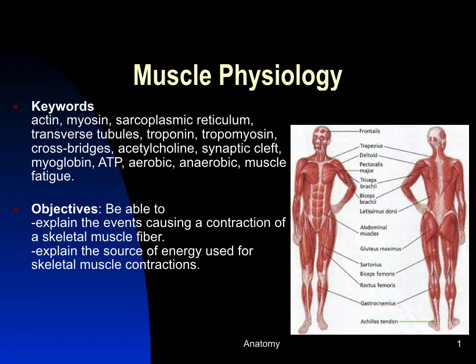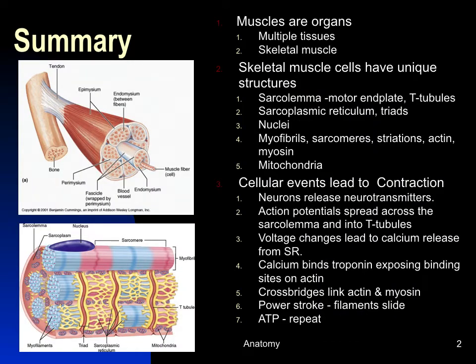We're going to continue our discussion of muscles by talking about how muscle cells contract and where the energy for contraction comes from. We're working on the muscular system — skeletal muscles. They provide movement, heat, posture, and communication. Muscles are organs containing multiple tissues, but the primary tissue that contracts is skeletal muscle tissue. They're connected by connective tissues like tendons to bones, and they provide movement.